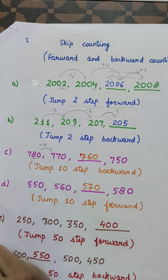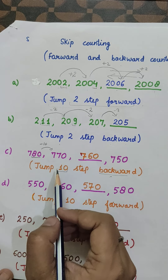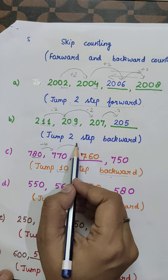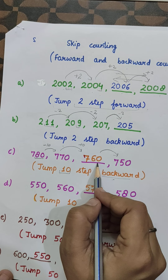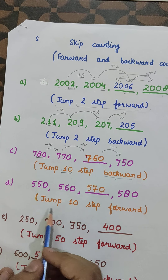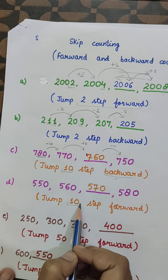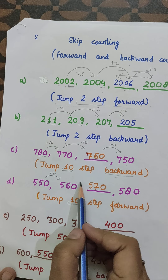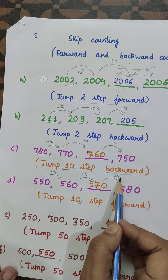Jump 10 steps backward — backward means minus 10 each time. So: 780 minus 10 is 770, minus 10 is 760, minus 10 is 750. Jump 10 steps forward — forward means plus 10. So: 550 plus 10 is 560, plus 10 is 570, plus 10 is 580. Our answer is correct.